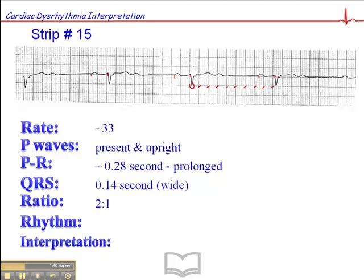The ratio, if you'll notice on this one, is 2 to 1. We have a P wave here, we have a P wave here, and we have a QRS. We have a P wave here, a P wave here, and a QRS. P wave, P wave, QRS, and so on and so forth.